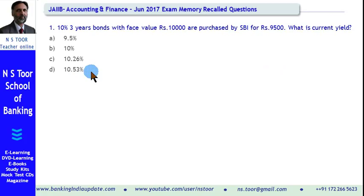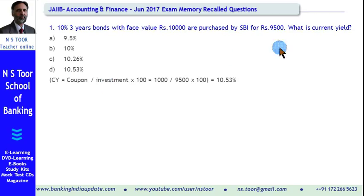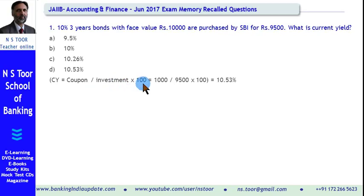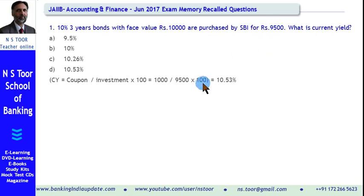To find the answer, we have to make the actual calculation. Current yield is calculated as coupon amount divided by investment, i.e. the purchase price, multiplied by 100. The face value of the bond is Rs. 10,000. At 10%, the coupon amount is Rs. 1,000. Purchase price is Rs. 9,500. So we get 10.53% as the current yield on this bond.